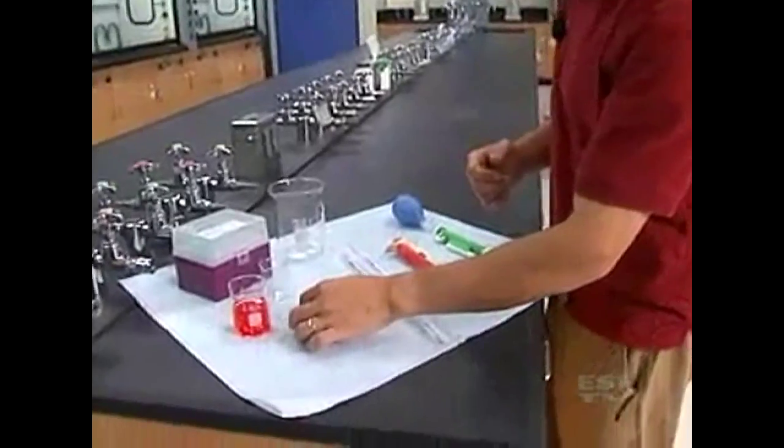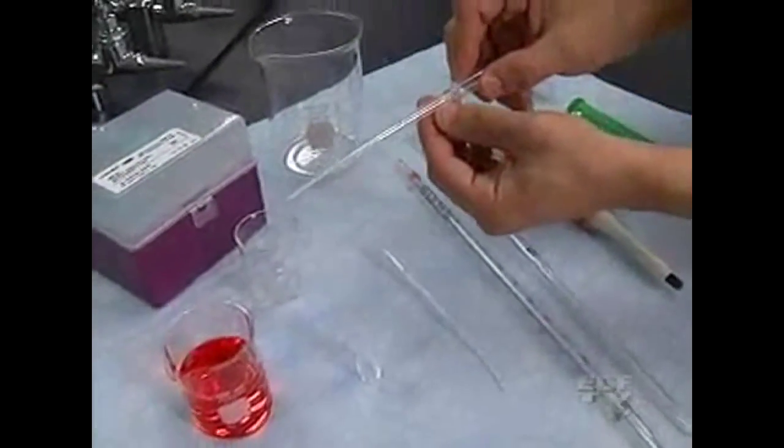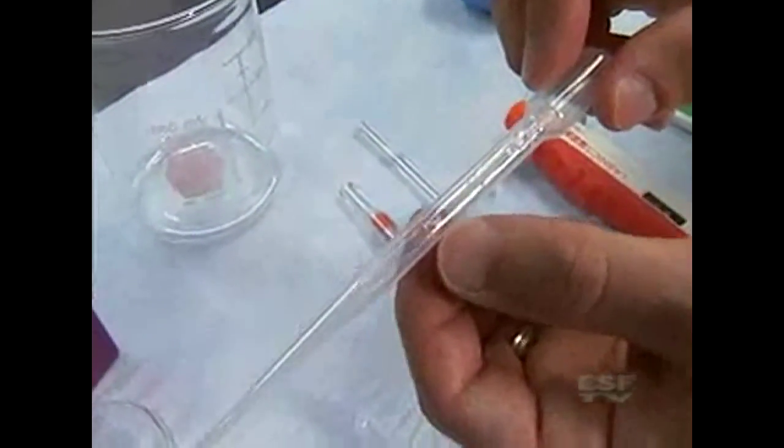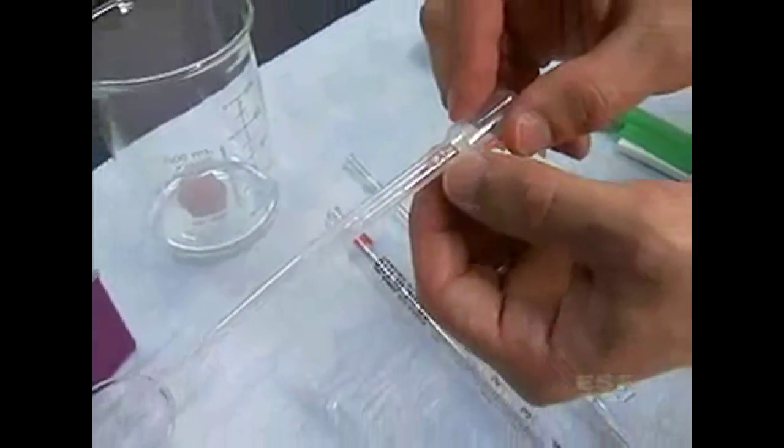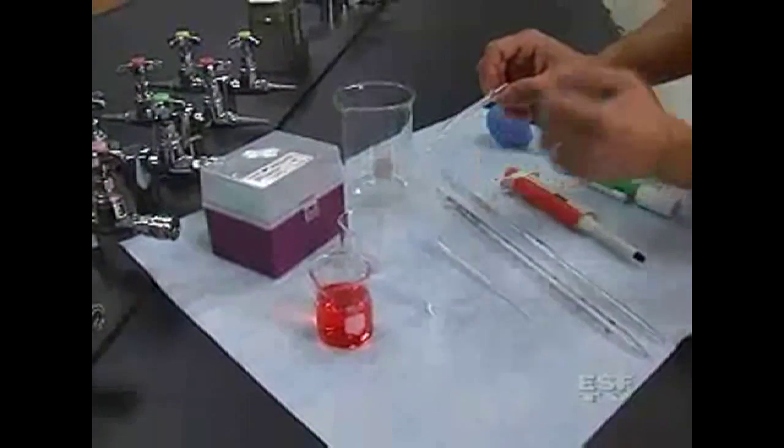For example in this case we're going to fill a cuvette. Now I'm going to take my transfer pipette and if we look at it we can see that the cuvette has some markings on it. One milliliter and two milliliters and there are other pipettes that have three milliliters or more. But in this case it's just for the transfer.